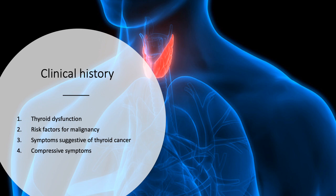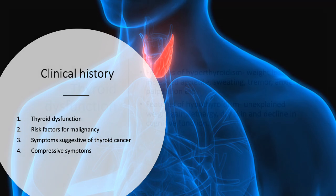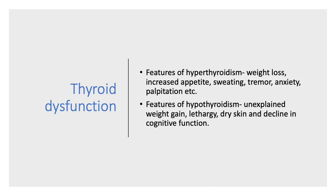Patients with discrete thyroid swelling should be assessed in four main aspects in the clinical history: features of thyroid dysfunction, risk factors for thyroid malignancy, symptoms suggestive of thyroid cancer, and any compressive symptoms. Discrete thyroid swelling can present with thyrotoxicosis due to a toxic nodule or a toxic multinodular goiter, or it can be part of a thyroiditis presenting with hypothyroidism. Biochemical assessment of thyroid function is always necessary.